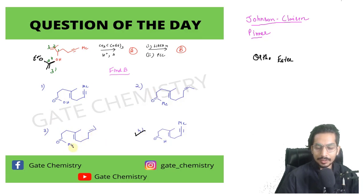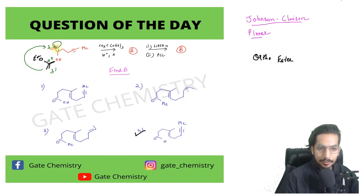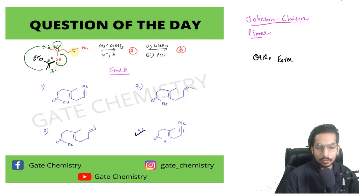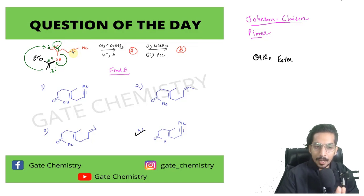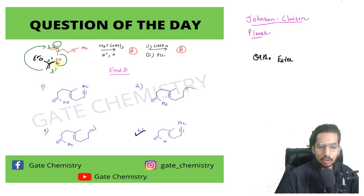Draw the structure on a piece of paper. The attack happens here — the double bond migrates, and this bond breaks. Nothing happens on the other end. Try it out yourself; label the carbon atoms, make the adjustments, and join the carbons. I don't want to spoon-feed you.